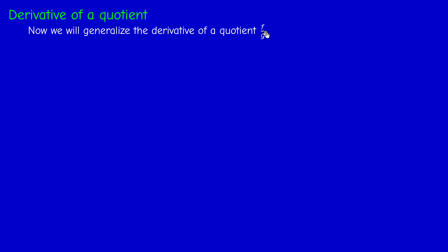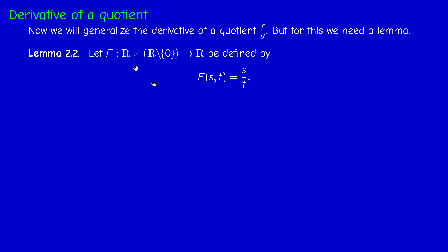For the quotient rule, since we cannot in general divide a vector by a vector, we assume f and g take values in R with g non-zero. We first need a lemma: consider the function F(s, t) = s/t defined for t ≠ 0. This function has partial derivatives of all orders. We shall use the fact that if a function has continuous partial derivatives then it is C¹.